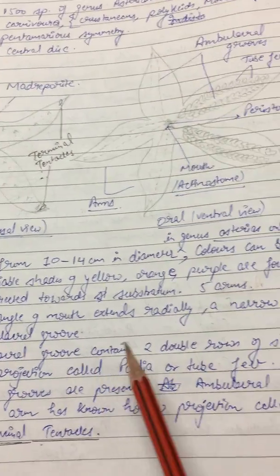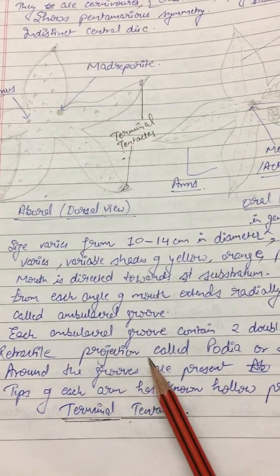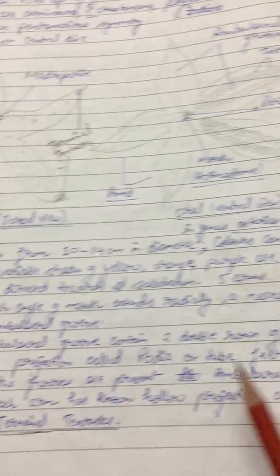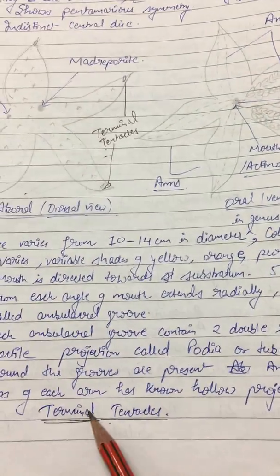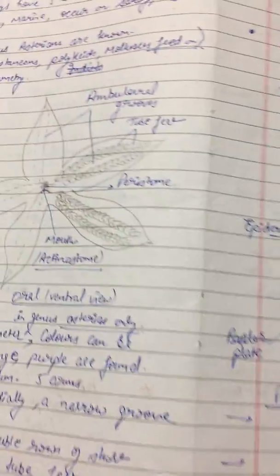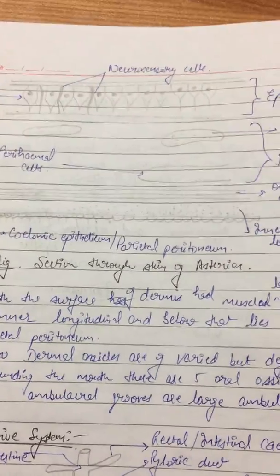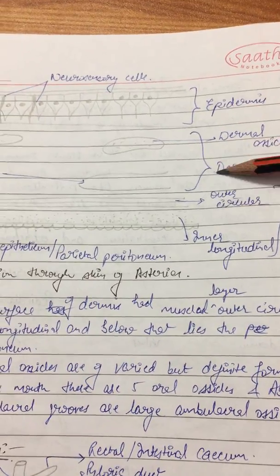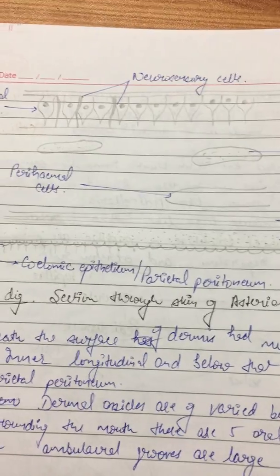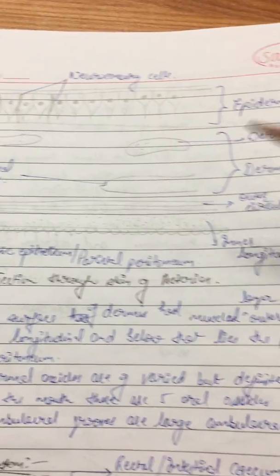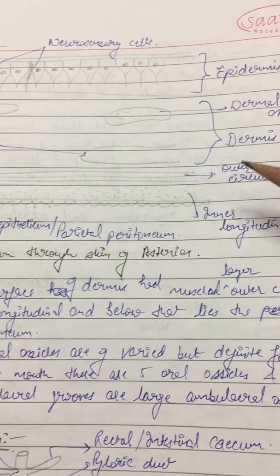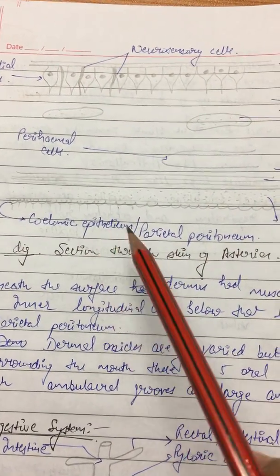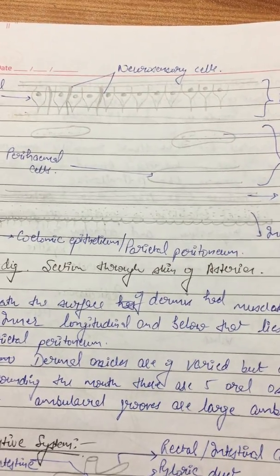Each ambulacral groove contains two double rows of short retractile projections called podia or tube feet. Around the grooves are present ambulacral spines, and the tip of each arm has a hollow projection called a terminal tentacle. In the section of the skin of Asterias: the top layer is epidermis, then dermis, then a muscle layer. In the epidermis there are neurosensory cells and epithelial cells. In the dermis there are dermal osseous cells and perihemal cells. Then there are outer circular and inner longitudinal muscle cells, and at the bottom is the coelomic epithelium and parietal peritoneum.